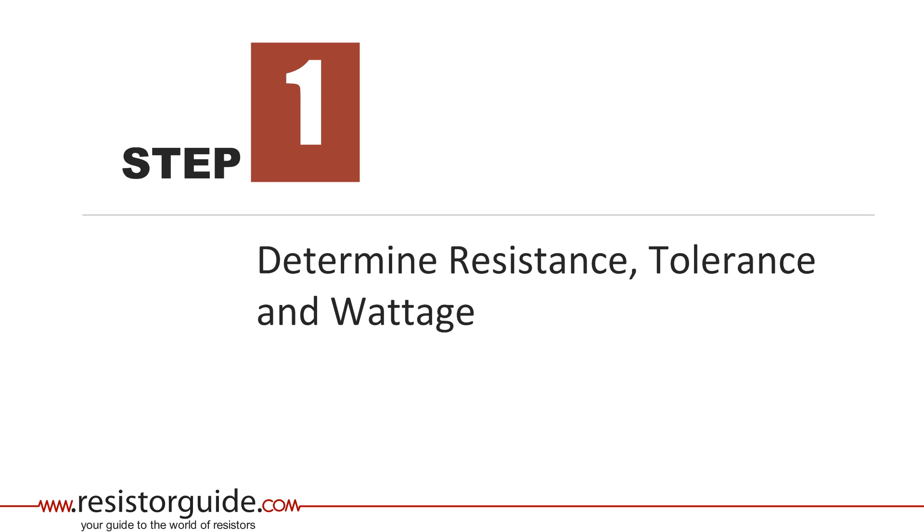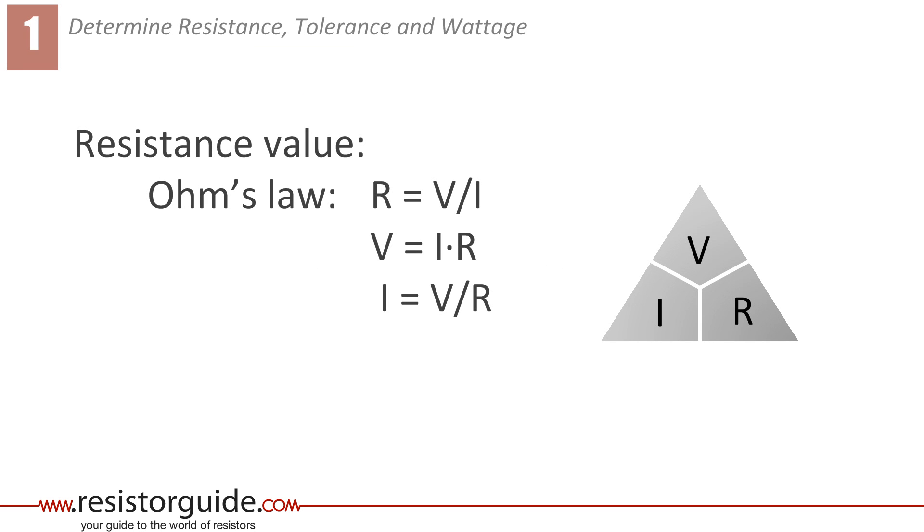First we calculate the resistance value in ohms, the allowed tolerance, and the consumed power in watts. The resistance can be calculated with Ohm's law. The triangle on the right can be helpful to remember the three variations of Ohm's law. When two of the three terms are known, it's easy to calculate the unknown.